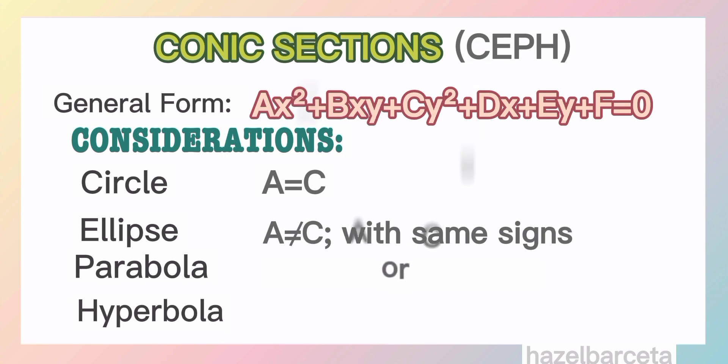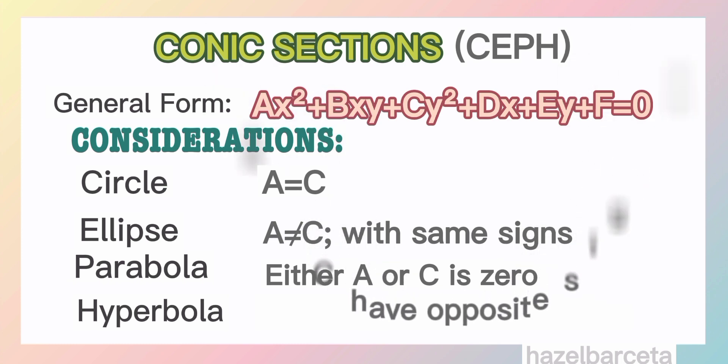When either A or C is zero, it is a parabola, and when A and C have opposite signs, it is hyperbola.